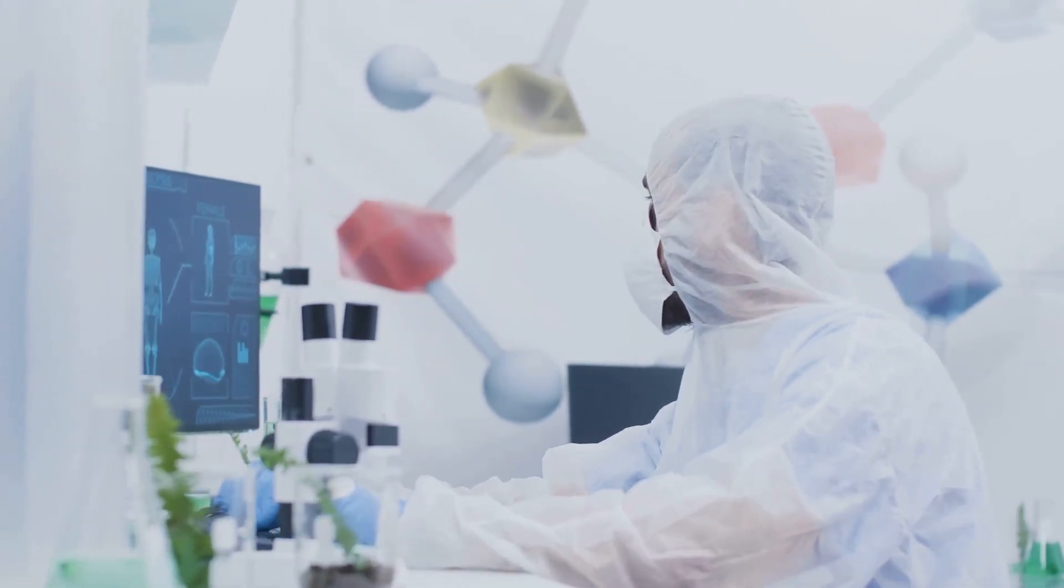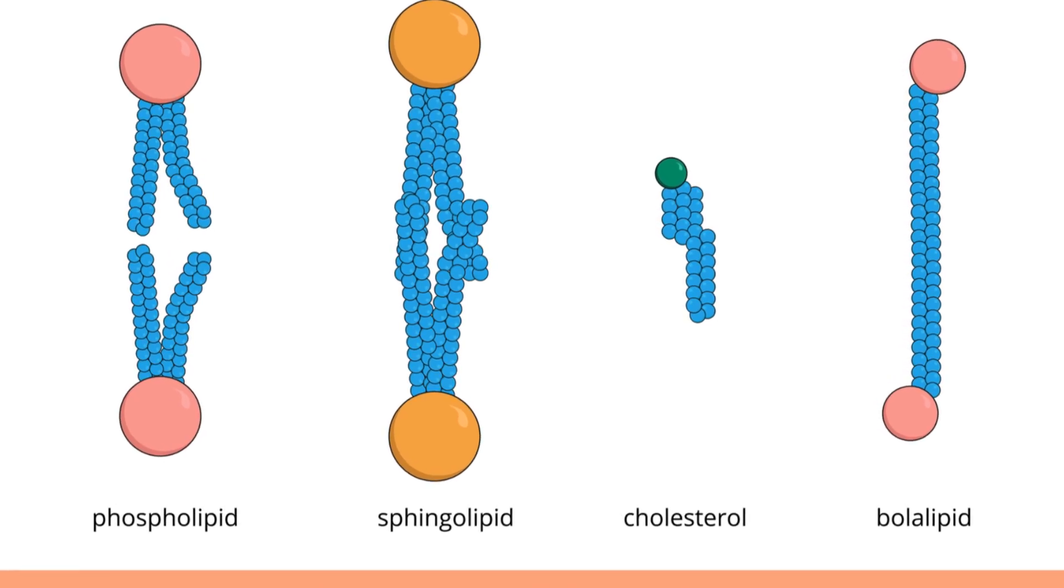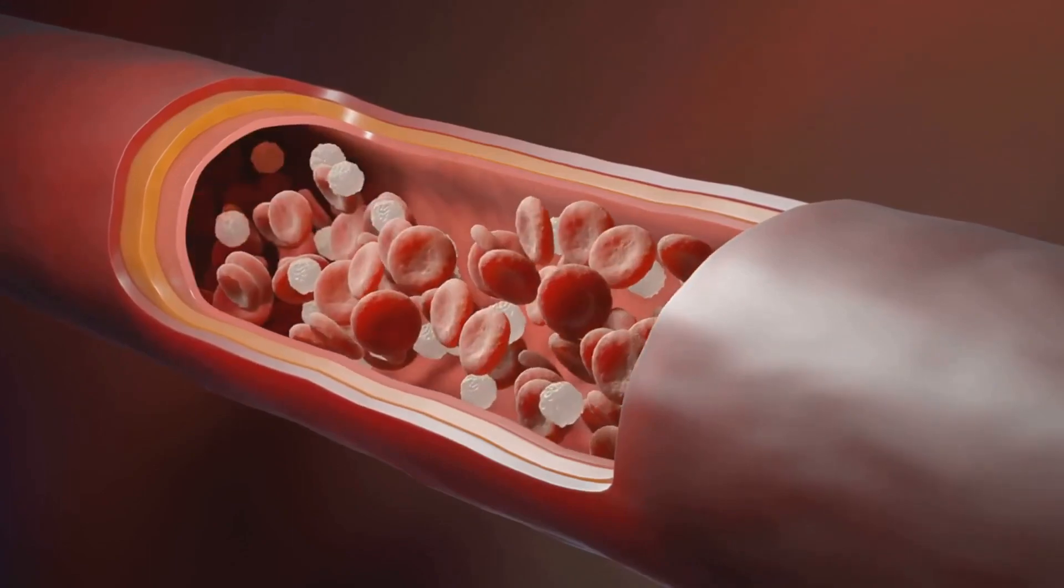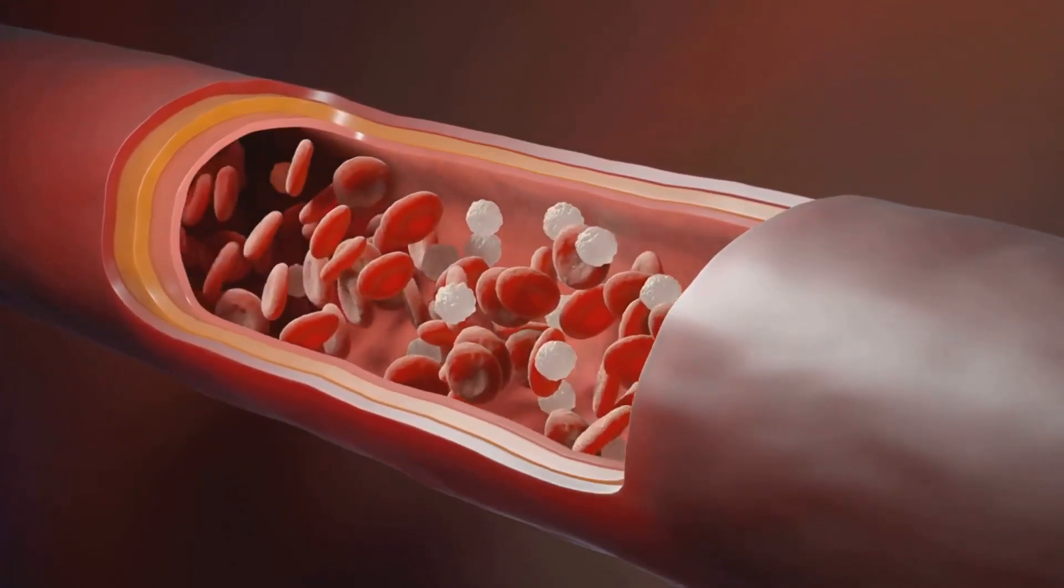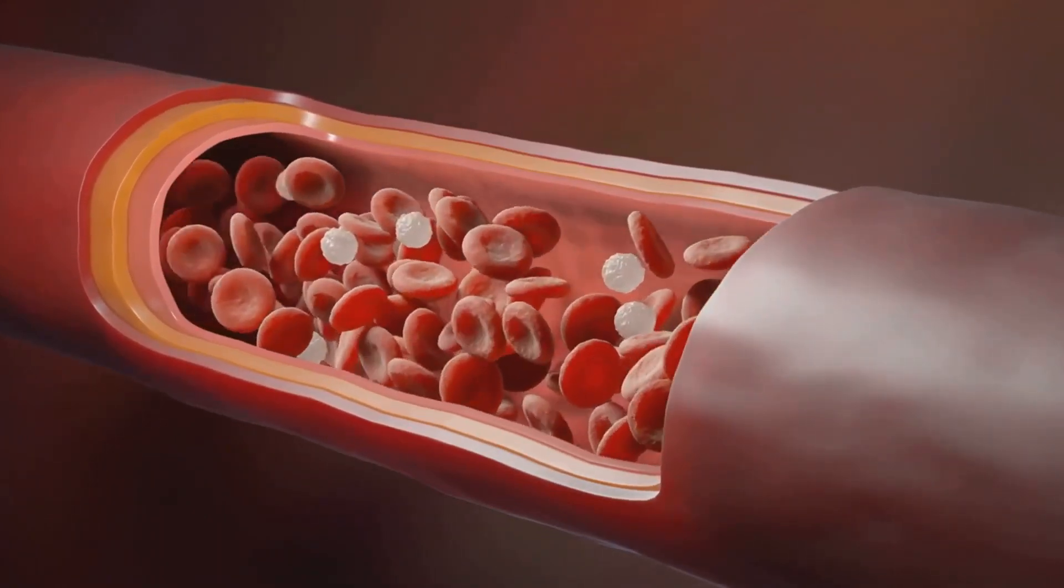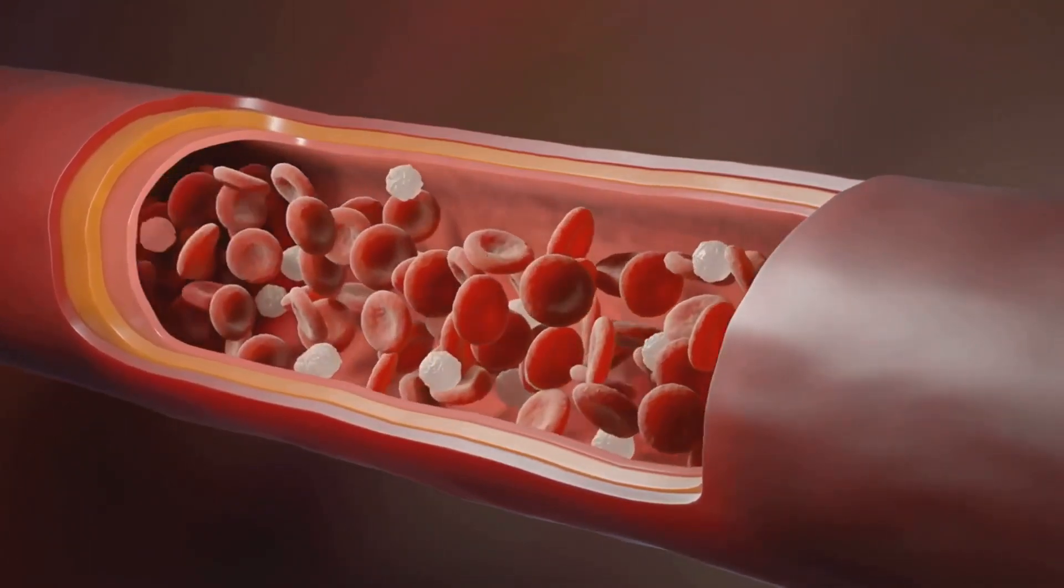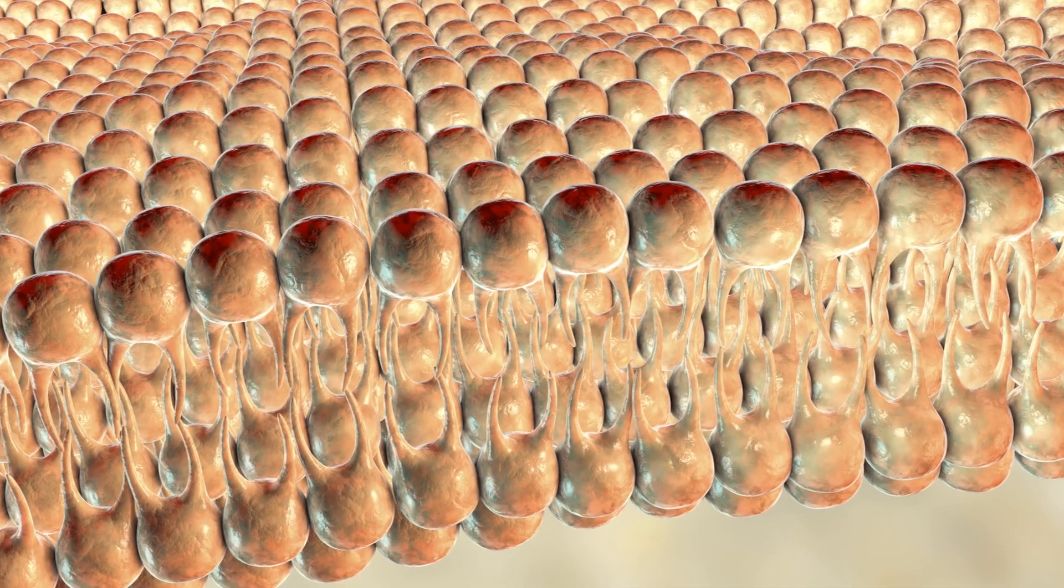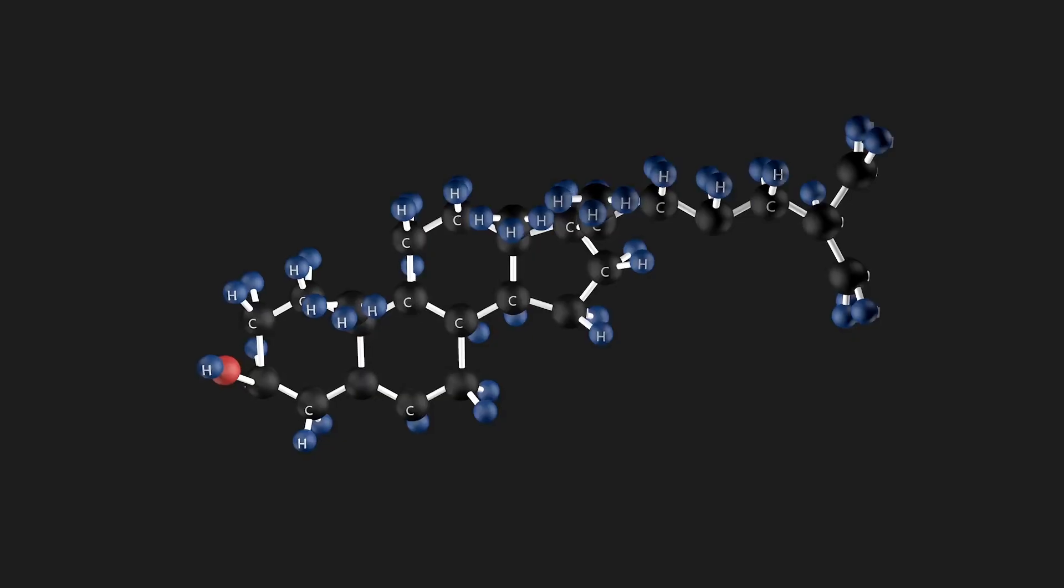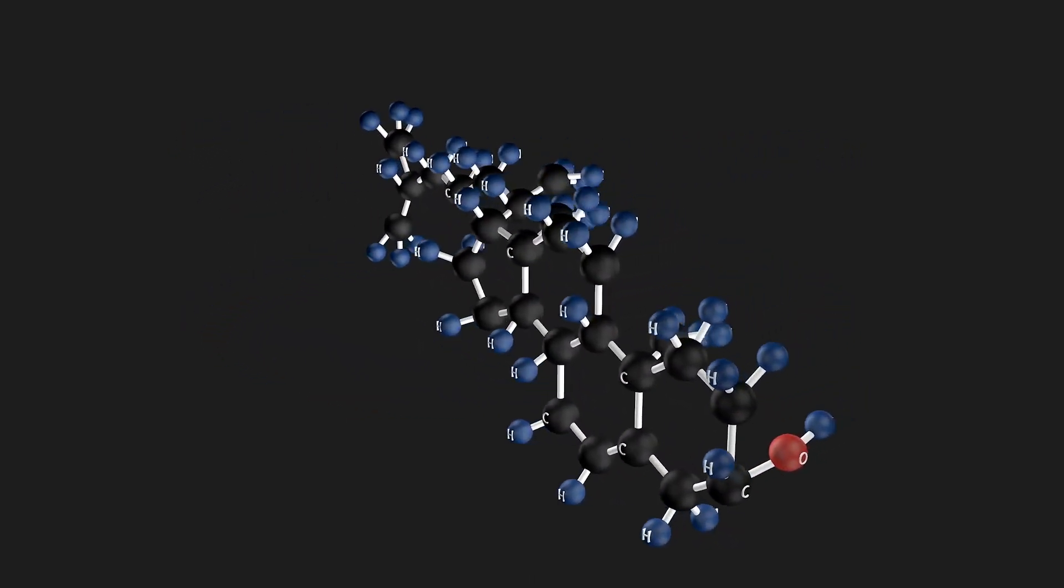While the rough ER is the protein synthesis hub, the smooth ER is a master of lipid metabolism and detoxification. Lipids are a diverse group of molecules that include fats, oils, waxes and steroids. They play essential roles in cell structure, energy storage and signaling. The smooth ER is the primary site of synthesis for most lipids, including phospholipids, which are the main structural components of cell membranes. It's also involved in the synthesis of cholesterol, which is a precursor to steroid hormones and is an important component of cell membranes.